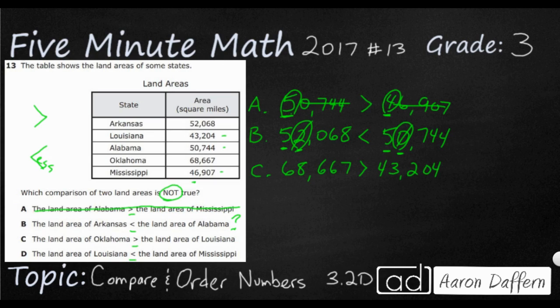Start at the biggest place value. Six and four. Both of those are in the ten thousands place. Is six greater than four? Yes, it is.